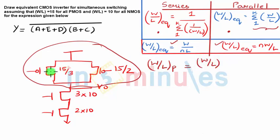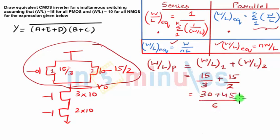So W by L parallel when W by L is not same is equal to W by L of transistor 1 plus W by L of transistor 2, which is nothing but 15 by 3 plus 15 by 2, which very simply is 30 plus 45 by 6, so 12.5. So my PMOS equivalent is nothing but 12.5.